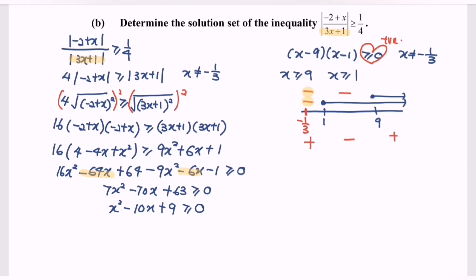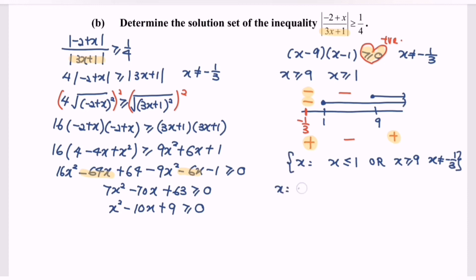Referring to the sign, the region must be the positive region. So the answer would be x such that x is less than or equal to 1 or x is greater than or equal to 9, where x cannot equal negative 1 over 3. That gives us: x less than negative 1 over 3, or negative 1 over 3 less than x less than or equal to 1, or x greater than or equal to 9. That is the solution set for this inequality.